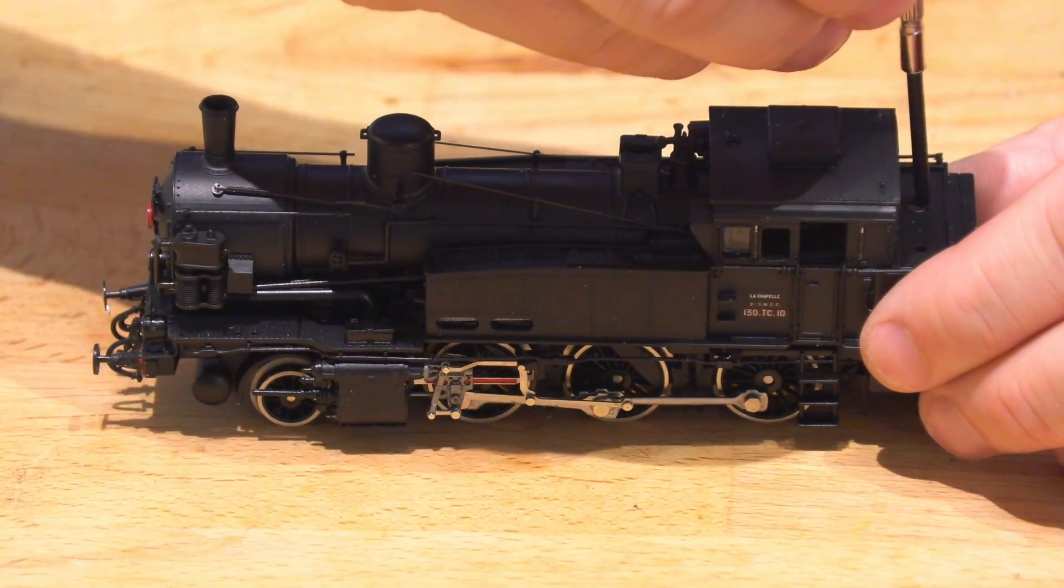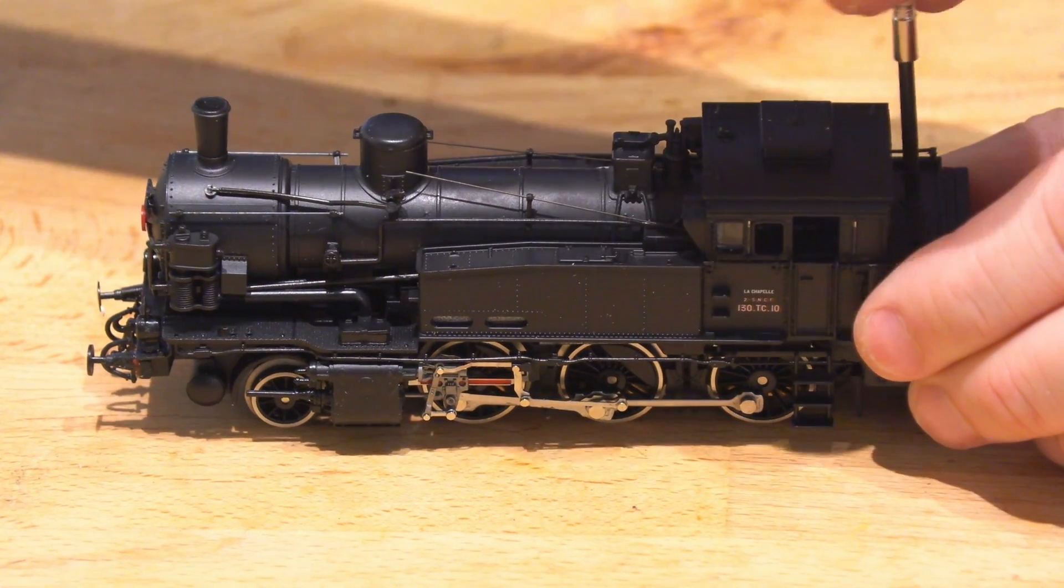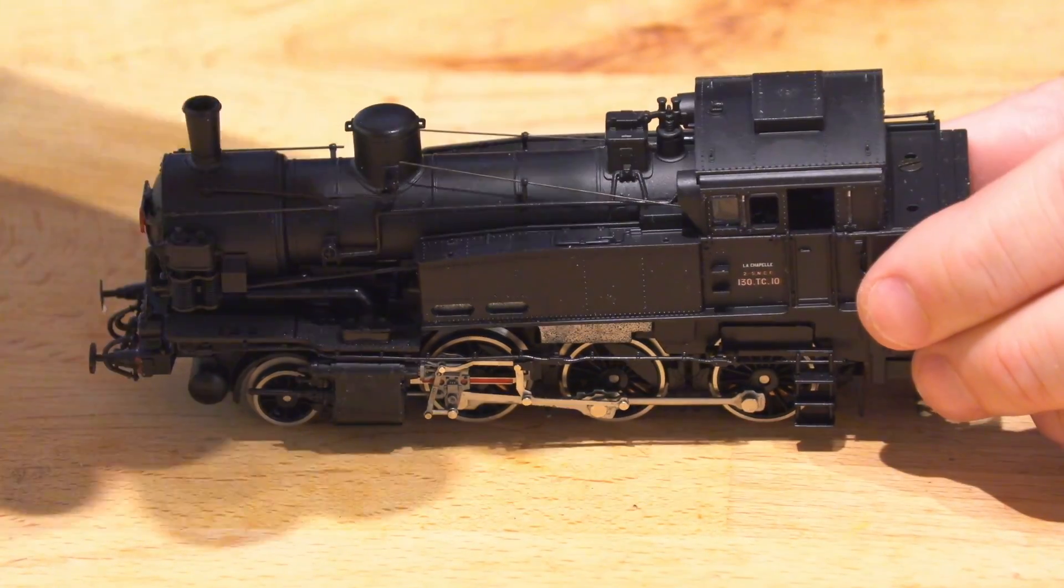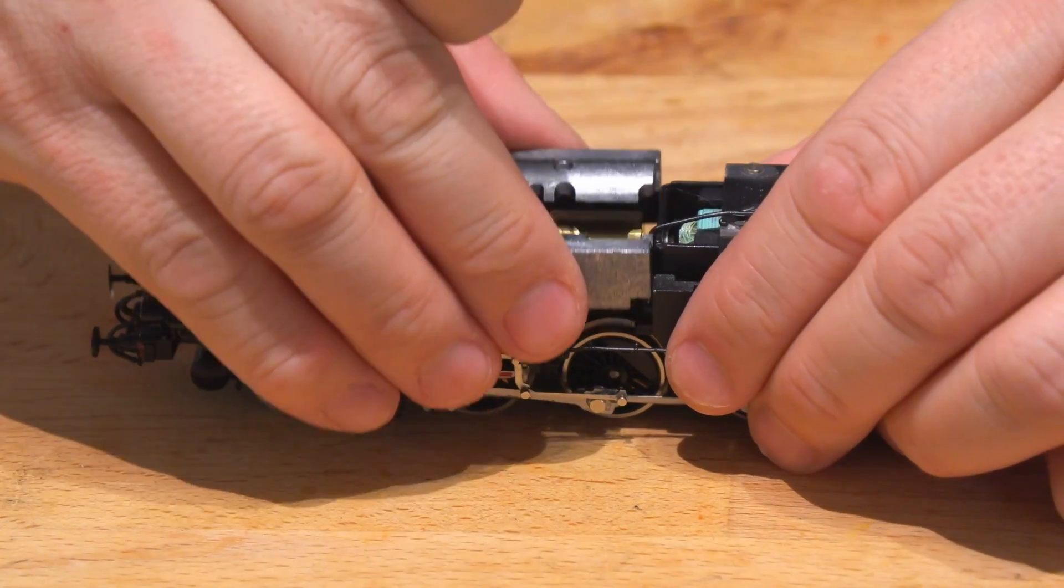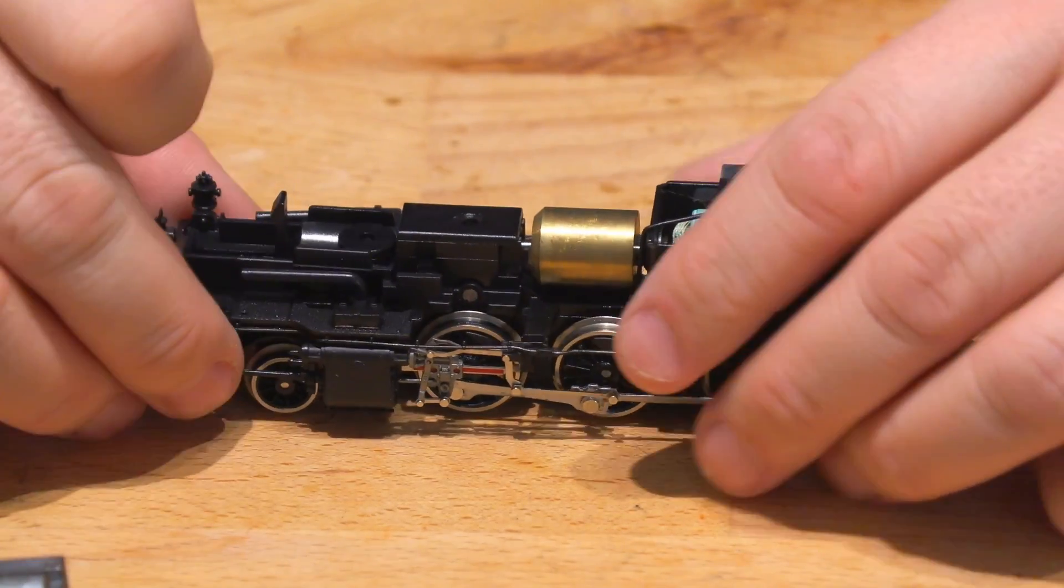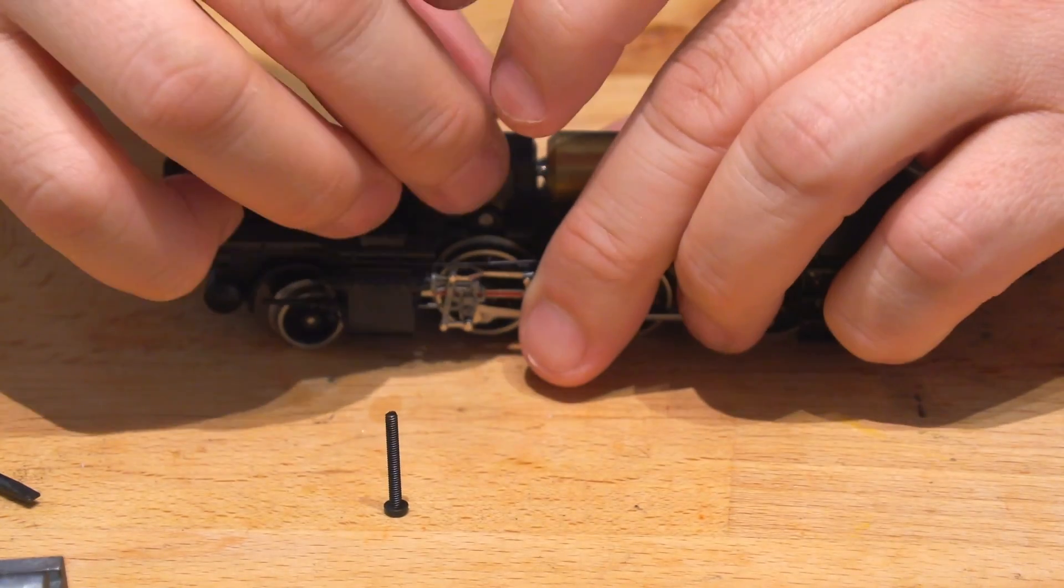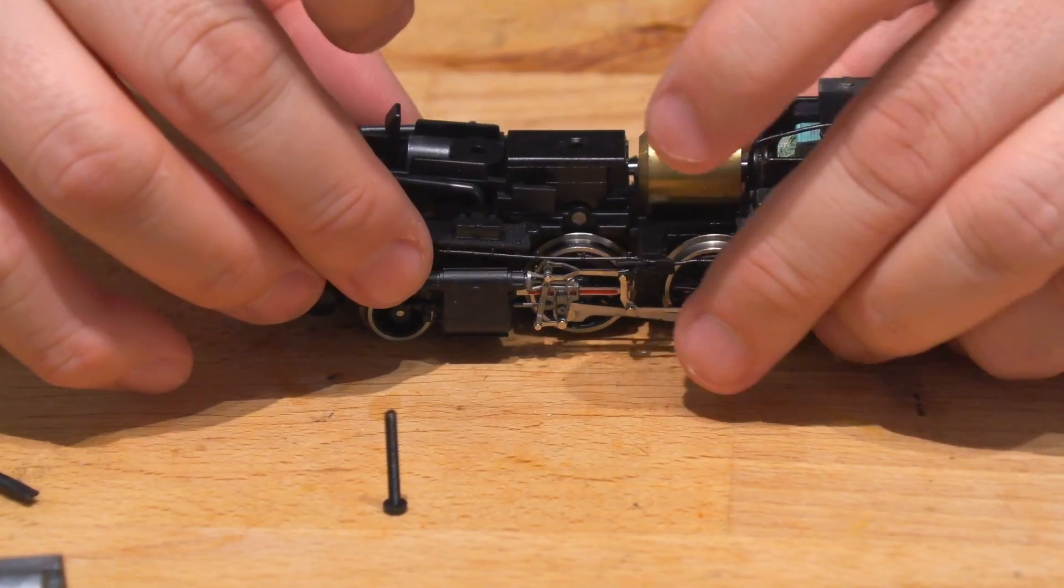Then it's time to remove the body. There are two screws underneath the coil and another at the front underneath the boiler. I tried to open it before this video and messed it up. That's why the body looks crooked, but it will be fixed.